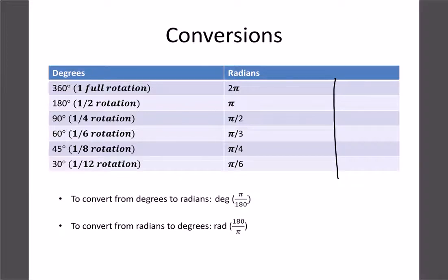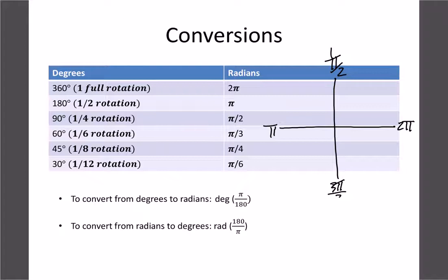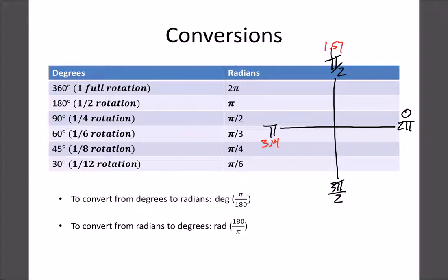Drawing this on a diagram: one complete circle is 2π radians, half is π, a quarter is π/2, and three-quarters is 3π/2. We start at 0, then go to 1, π/2 (about 1.57), π (about 3.14), 3π/2 (about 4.71), and back to 2π (about 6.28). We use pi notation to save time writing decimals.